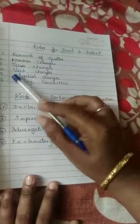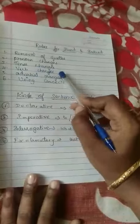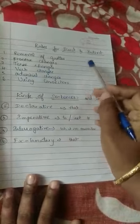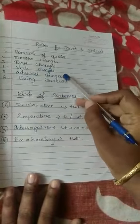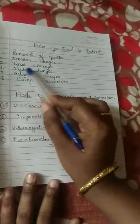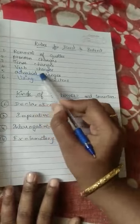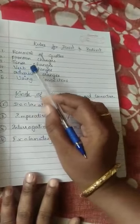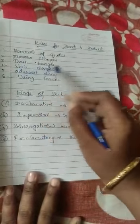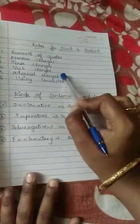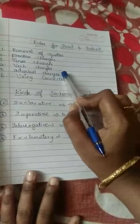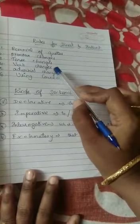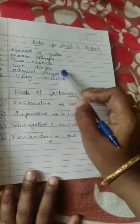Next, adverbial changes. Adverbial changes means 'here' will change into 'there', 'this' will change into 'that', 'now' will change into 'then', and 'yesterday' will change into 'the previous day'. These adverb changes are also applied, but it is not compulsory in all sentences. Where it is present, that we have to use.